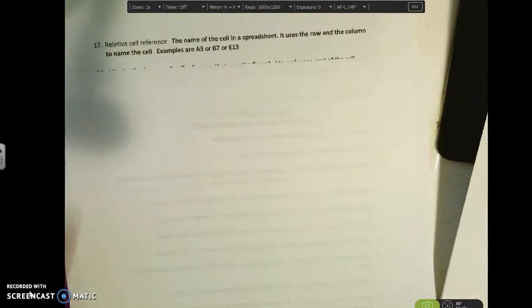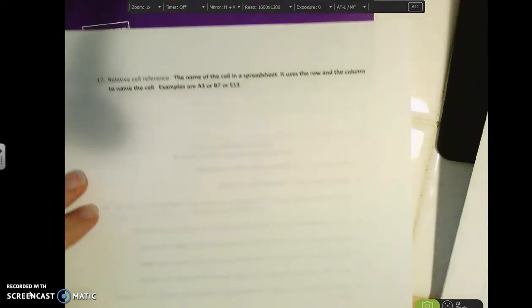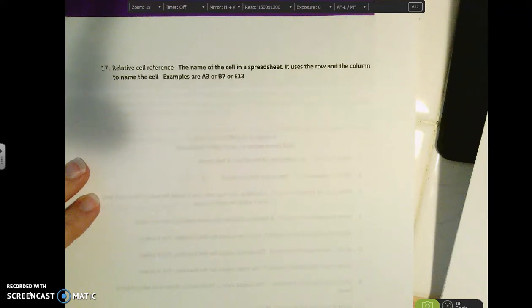Okay, we have a few more things to cover. As we're getting into more of the Excel files, you'll notice here you have a relative cell reference. The relative cell reference is the name of the cell in the spreadsheet. And we use the rows and the columns to name the cells. So examples of relative cell references are A3, B7, E13, there's a whole bunch of different possibilities. So when you're writing problems, most of the time you're going to be using relative cell references. So you have to make sure that you're using those and not just typing in the values in your calculator.